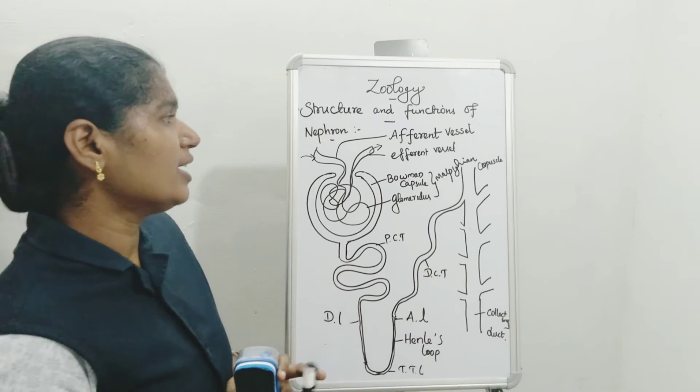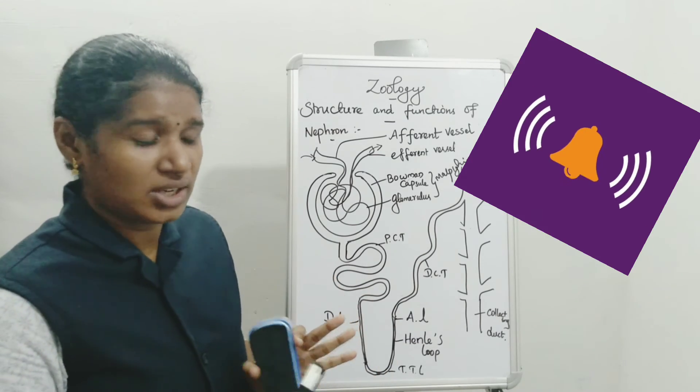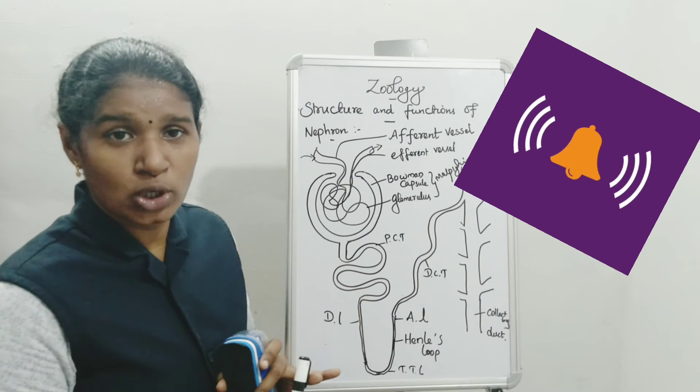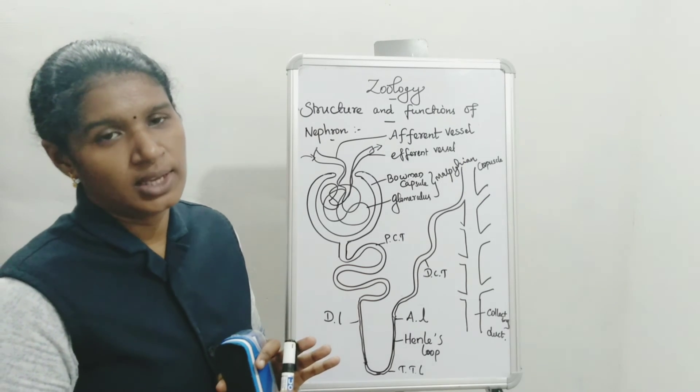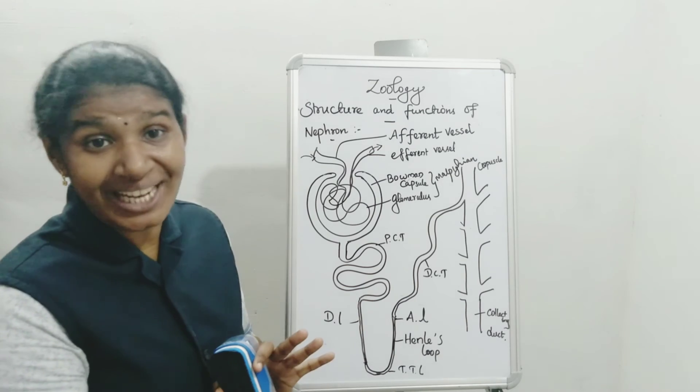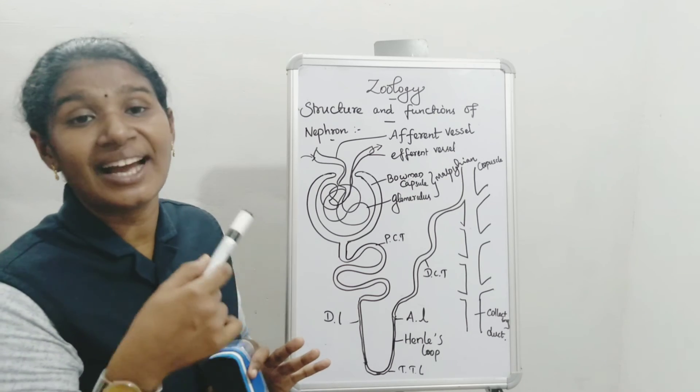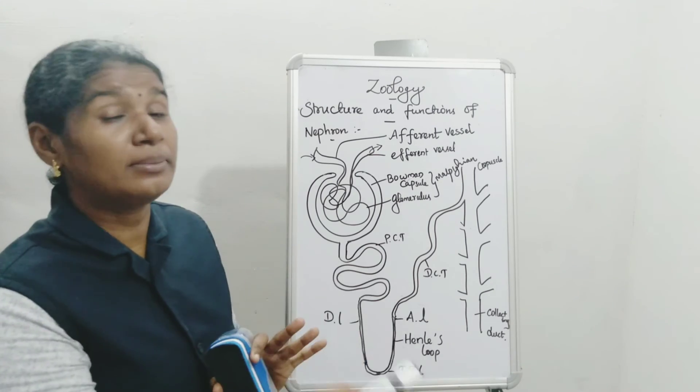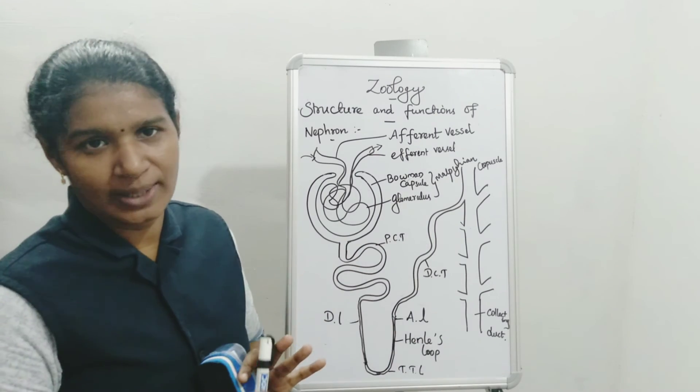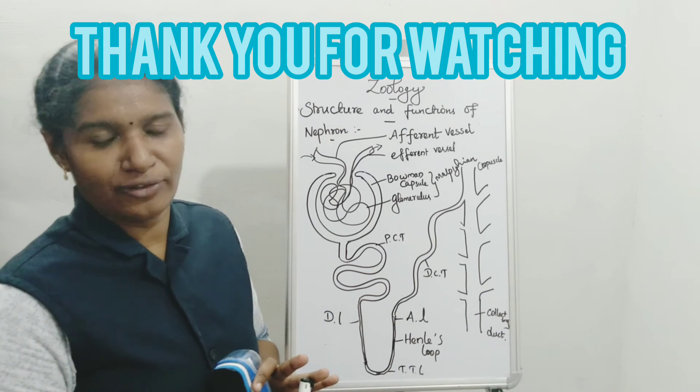So this is the structure of the nephron and its major functions. What are the three major functions? Filtration, reabsorption, and secretion. It reabsorbs the wanted material and eliminates uric acid, ammonia, creatinine, those unwanted matters out of the body. So this is called structure and functions of nephron.